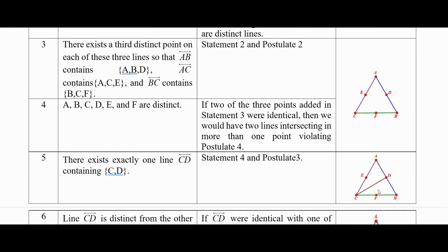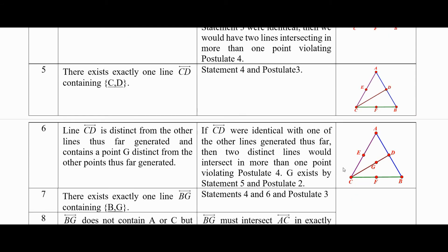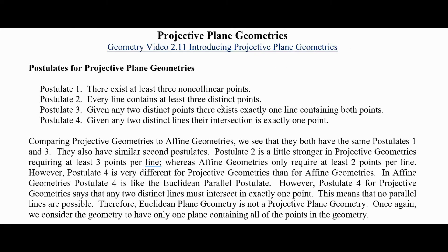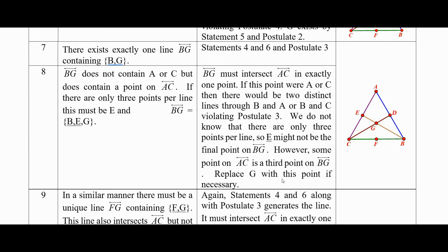Now there must be a line connecting C and D, because any two points determine a unique line. That line is not one of our existing lines. By postulate two, there must be a third point on that line — let's call it G — different from any of the points we've had before. If it were the same as any existing point, we'd have two different lines intersecting in two points, which is not allowed by postulate three.